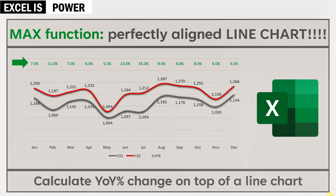I have the sales for two years — monthly data for FY21 and FY22. Not only this, on top of the chart you have the year-on-year percentage change for each and every month. Although the numbers are changing — seven percent, eleven percent, seven percent, eight percent — all the labels are perfectly aligned on top of the chart.